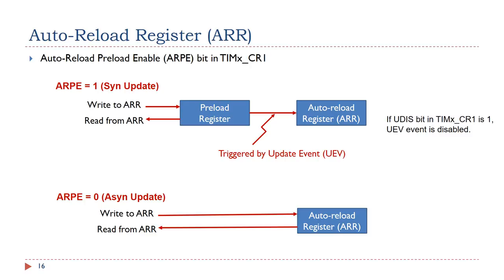The auto-reload register (ARR) can be updated synchronously or asynchronously. If the ARPE bit in the timer CR1 register is 1, ARR will be updated synchronously — an update to ARR will be buffered in a preload register, and its contents are transferred into ARR when the next update event occurs. This mechanism is synchronous to the timer's input clock and output period, preventing software from updating the output frequency while the timer is still performing comparison operations. If ARPE is 0, any updates to ARR take immediate effect — this update mechanism is asynchronous because it does not consider clock timing.